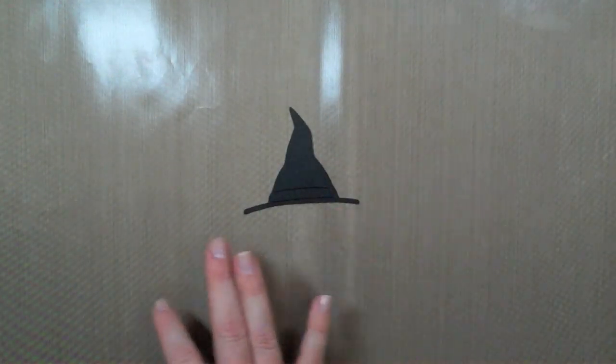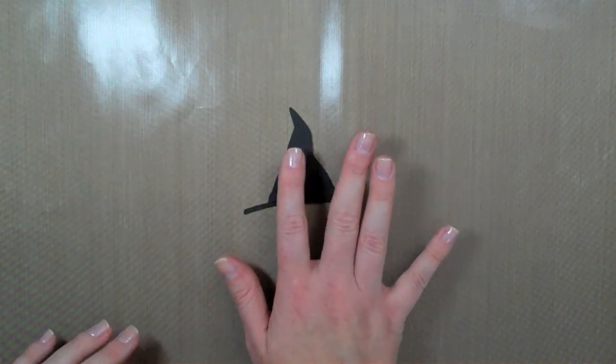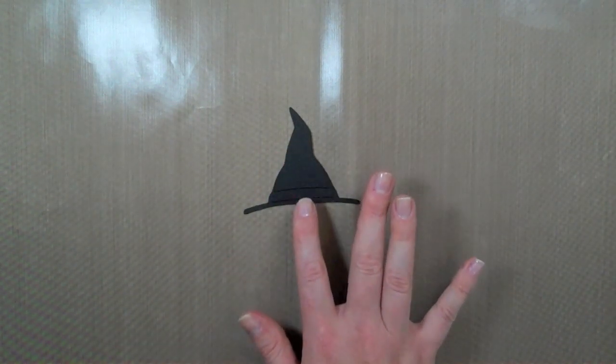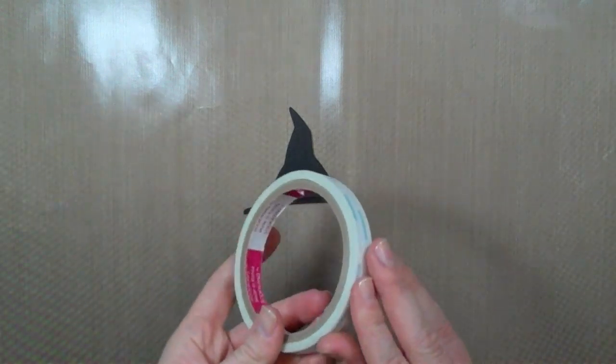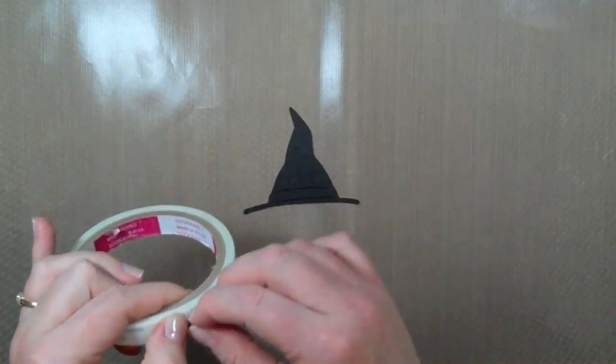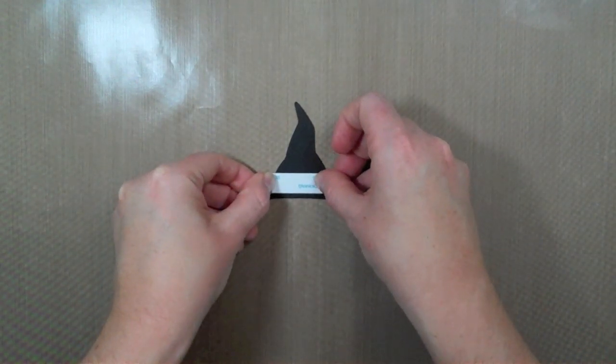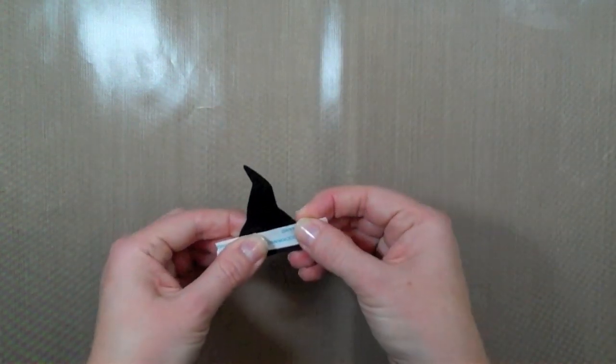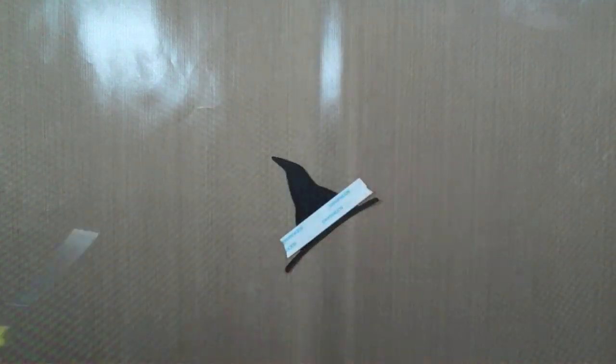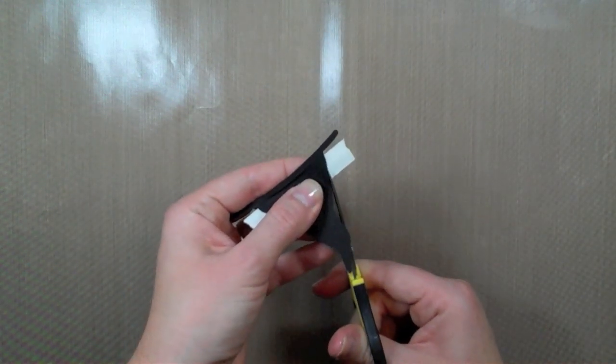So the next piece I'm going to kind of embellish is this witch hat here and this hat was also cut from the Paper Doll Dress Up Cartridge and it's cut at 4 1/4 and what I'm going to do is I'm going to take some score tape here. I'm just going to rip a piece off and I'm going to create this band across the front of the hat here. I'm just going to line that up with the band that's already kind of there and then I'll use my scissors to trim that down.